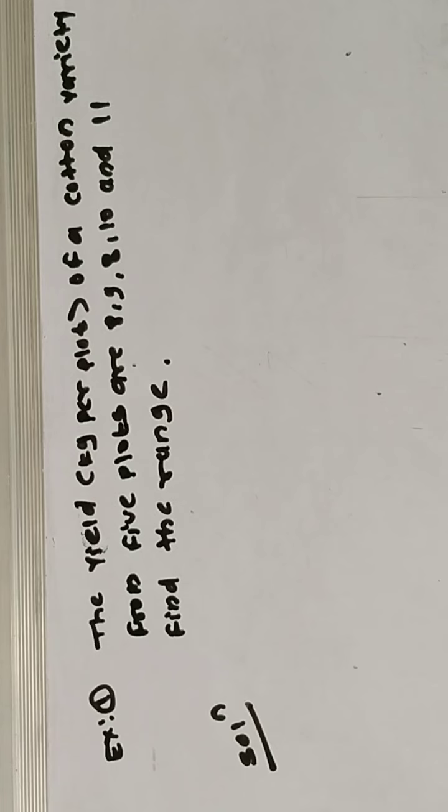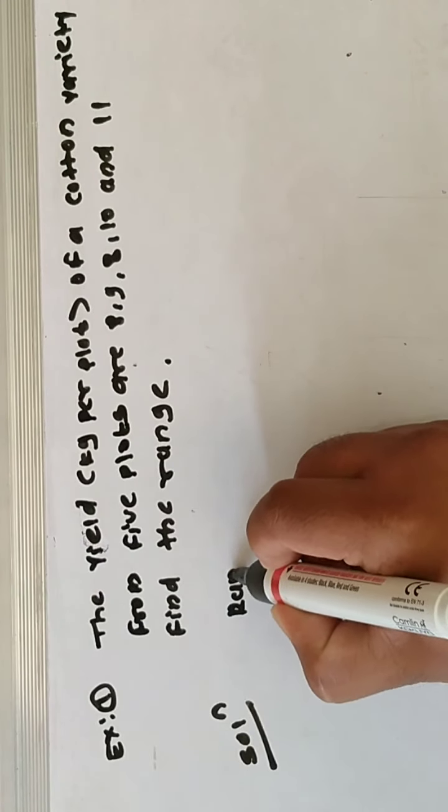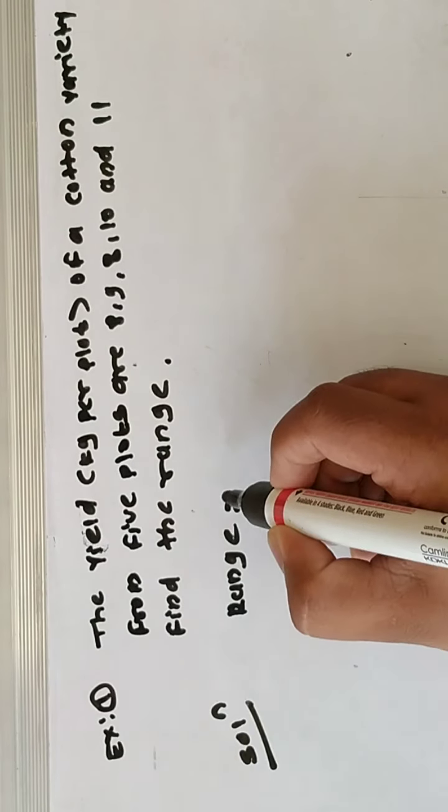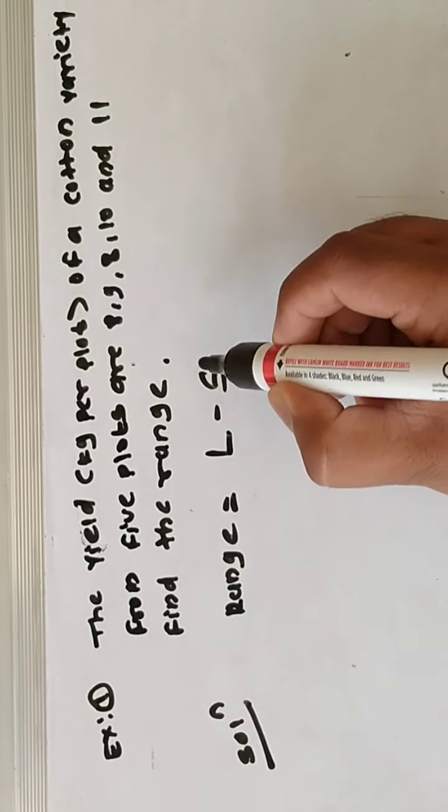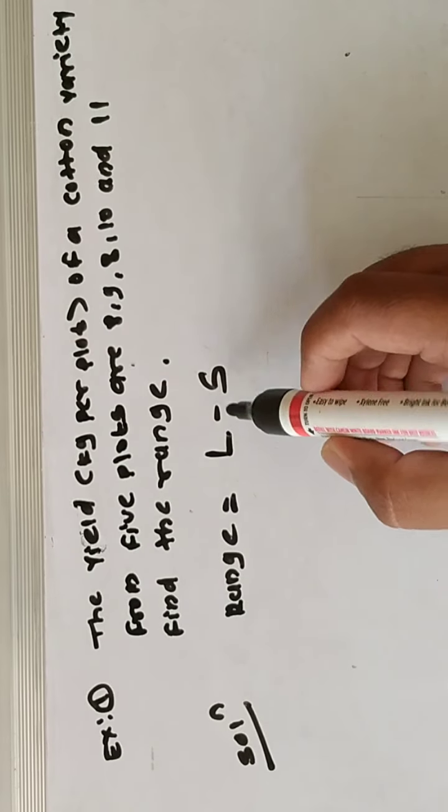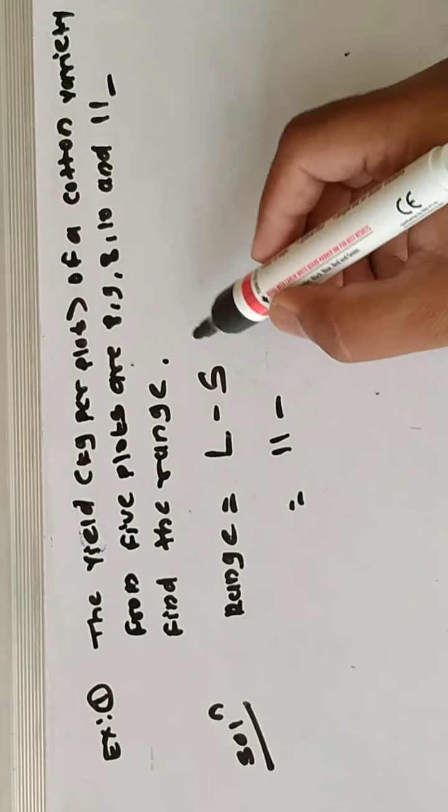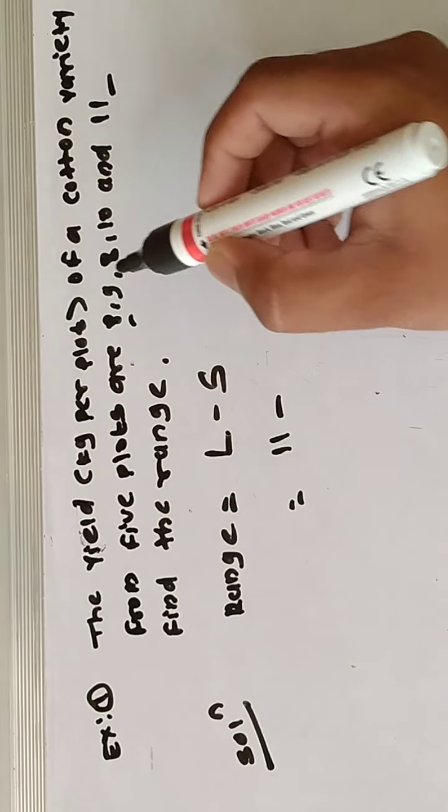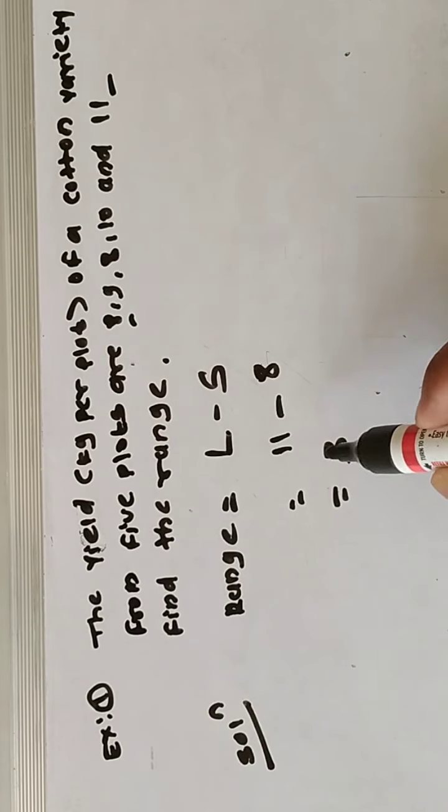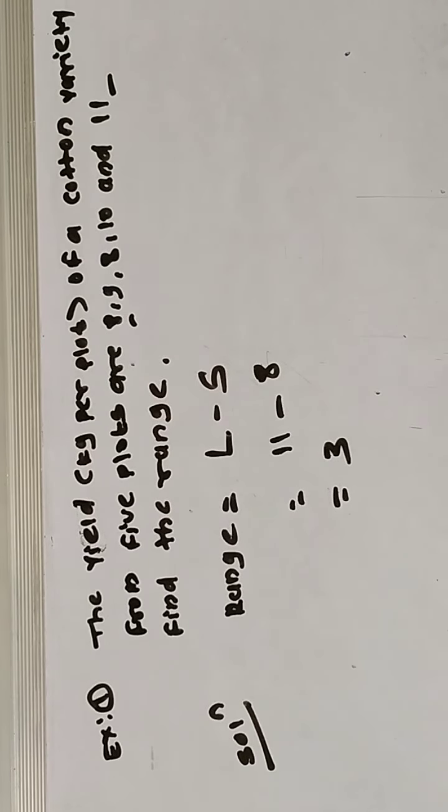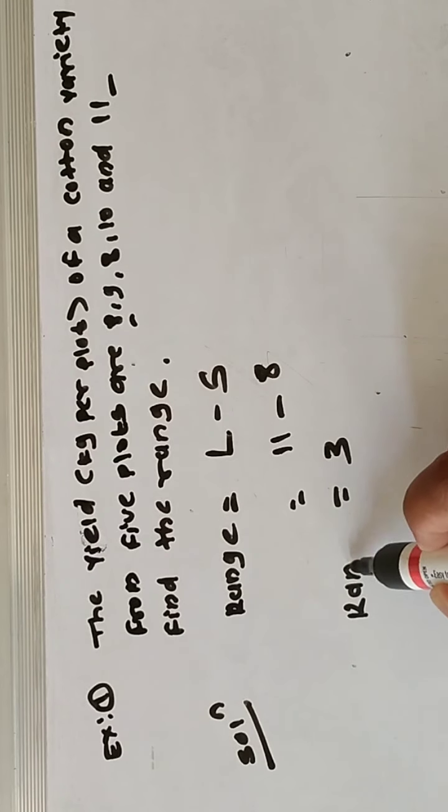Friends, we have the formula of range: range equals L minus S. So what is L? L means largest value, that is 11. S means smallest value, that is 8. 11 minus 8 equals 3, so range is 3.